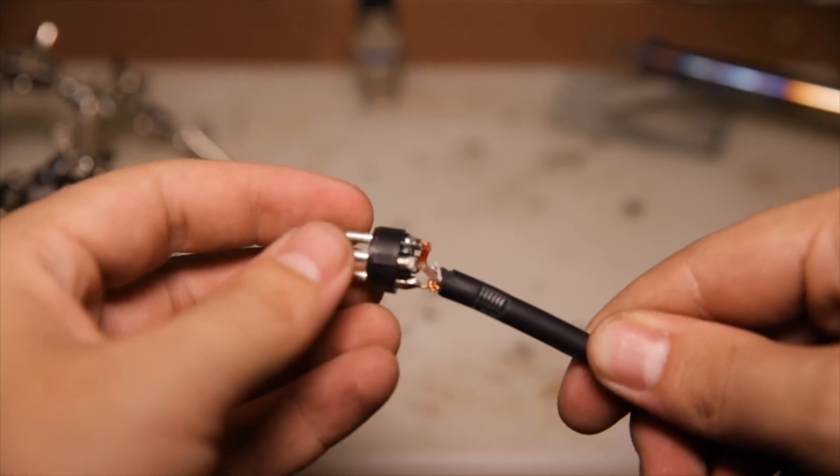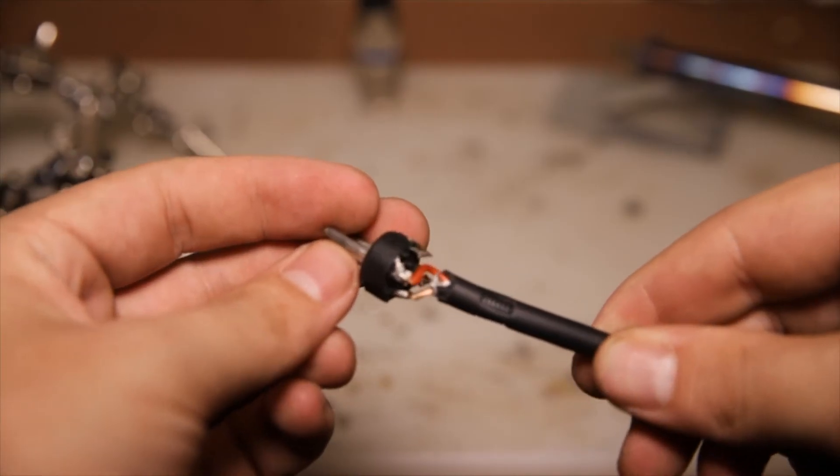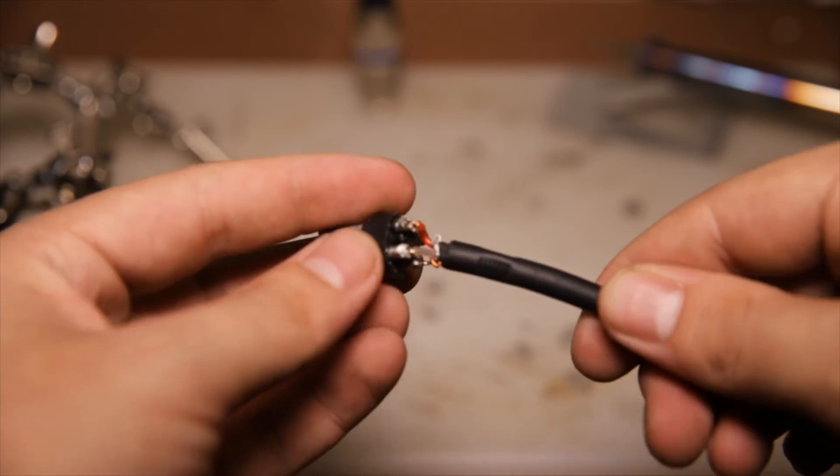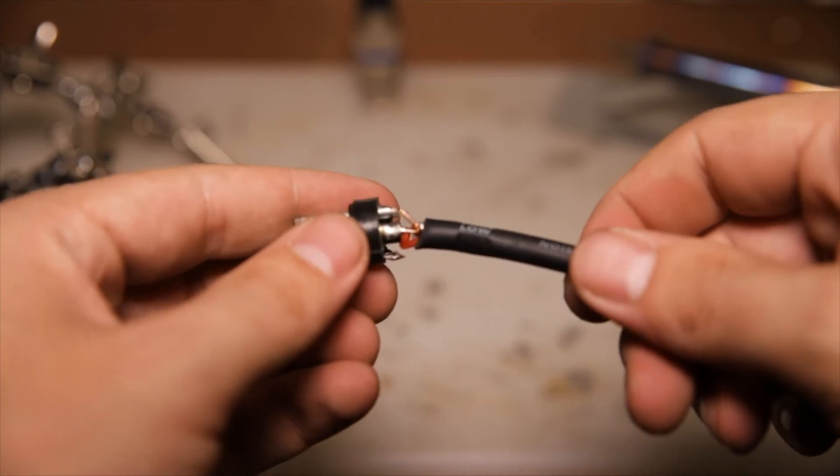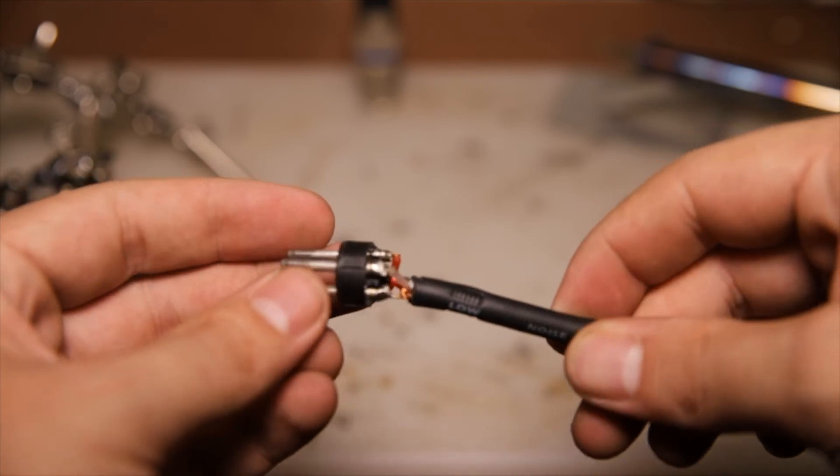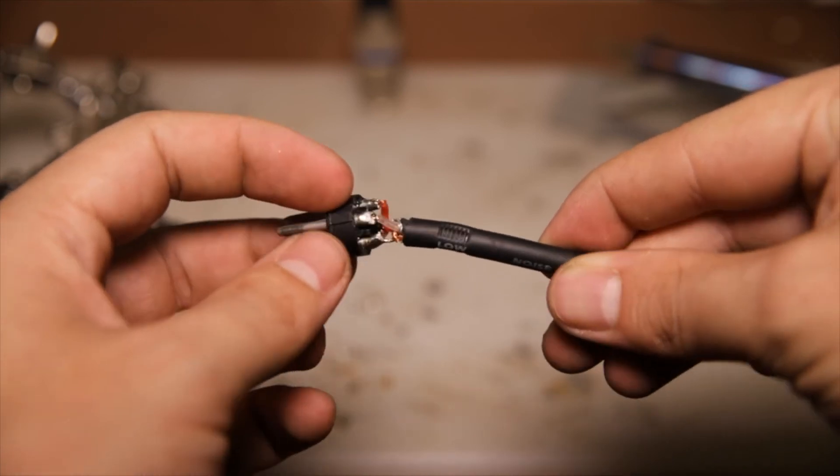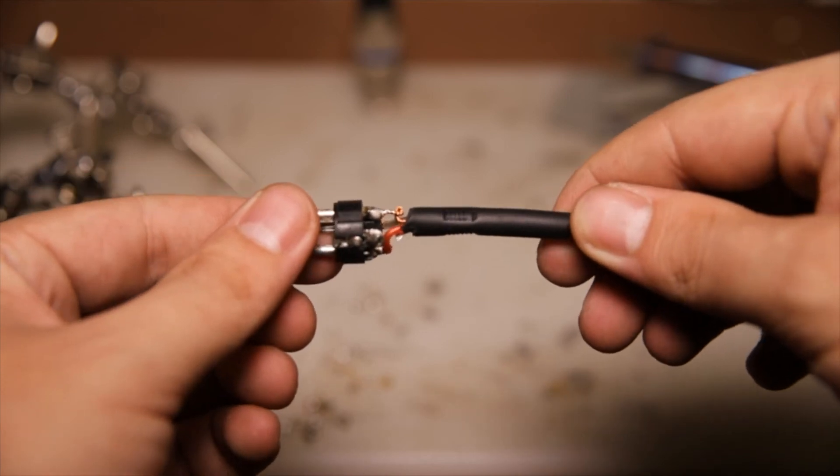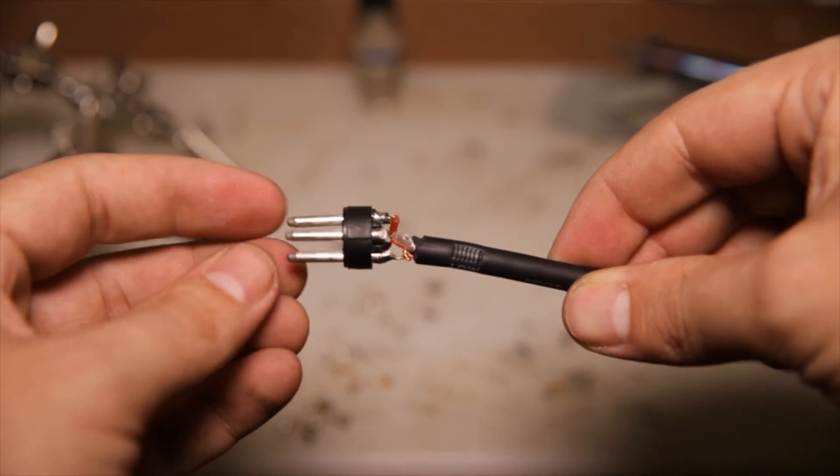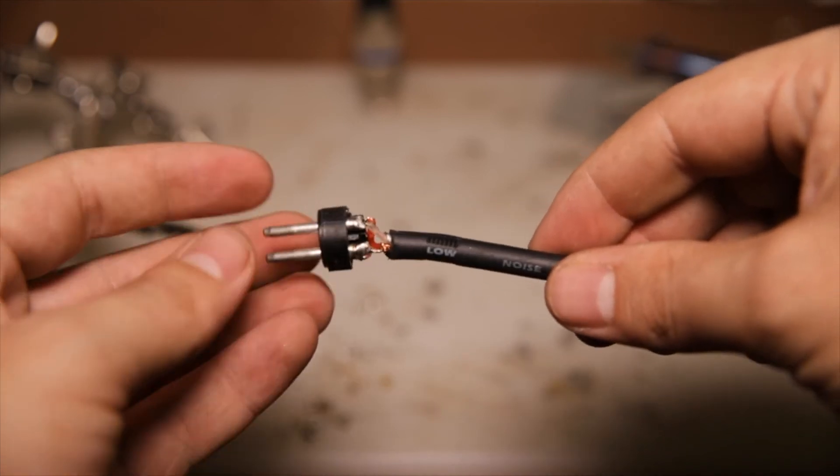Once you are done with that step, this is what you want to see. You can see my red cable is connected, the white cable, as well as my ground. You do not want any of them touching one another—that is very important—otherwise it's going to create noise when you plug it in and use the cable.